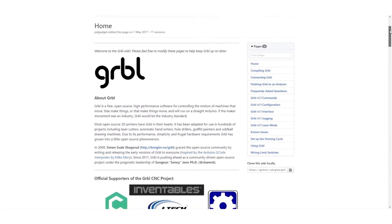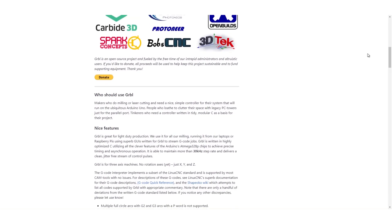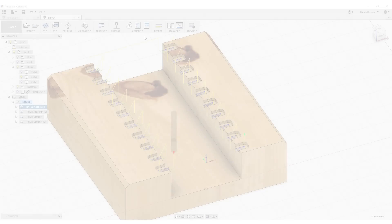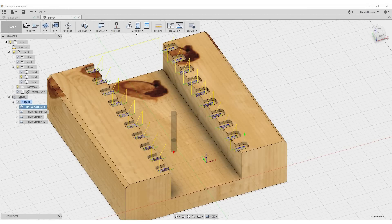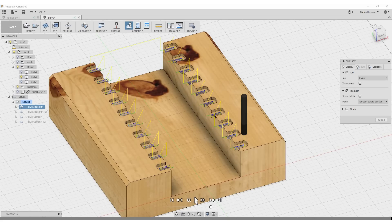On the software side I use Grbl on the Arduino Uno that interprets the G-code that is being streamed to it and translates it to stepper motor signals. So the instructions how the machine should move can be created in lots of different tools nowadays with even some browser based ones.